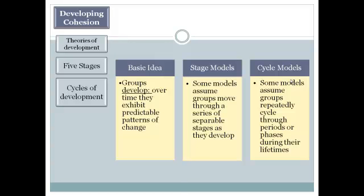There's actually some truth to both of these models. There is some predictability — linear 1, 2, 3, 4, 5 development — but there are also times where there might be backtracking and cycles. So there's some validity to both of these approaches.